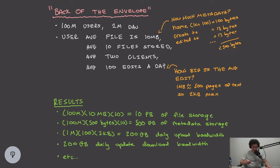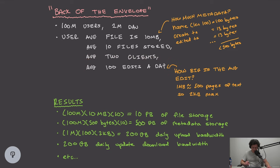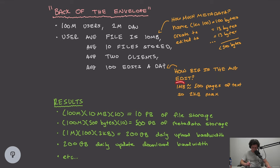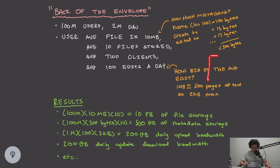Next, how much bandwidth do 100 edits per user per day use? We need to understand the average edit size. If a chunk is one megabyte, that's roughly 500 pages of English text. If we want a chunk to represent a single page of text — not 500 — then we're looking at a maximum of two kilobytes per chunk.